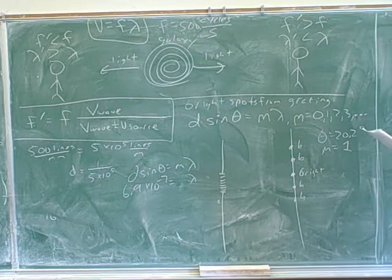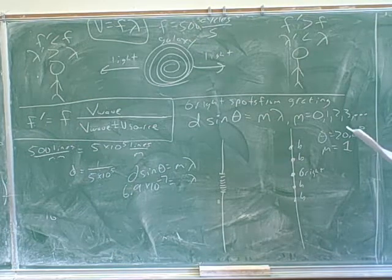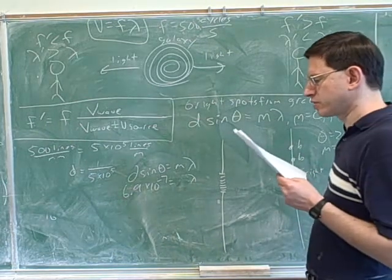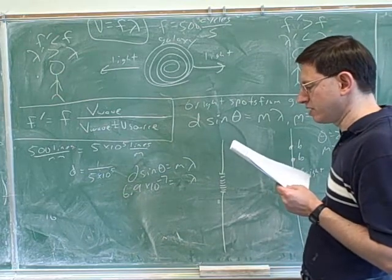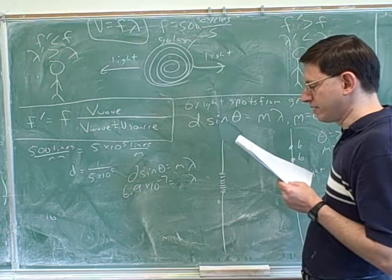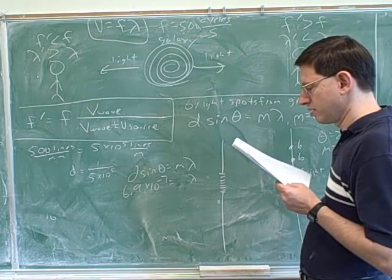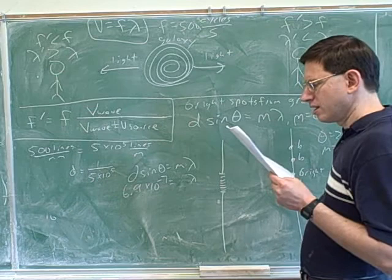All right, and then they observed this spectral line of hydrogen, right? In the grating, they observed the spectral line of hydrogen. Now, where is that light coming from that they observed? On Earth? Oh, from the galaxy, coming from the galaxy?